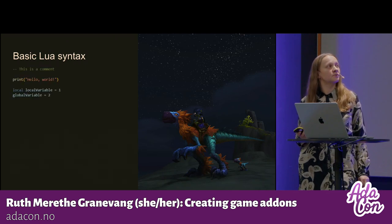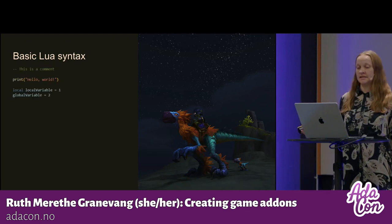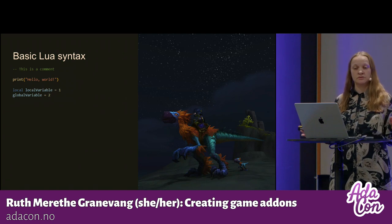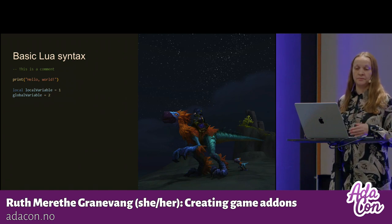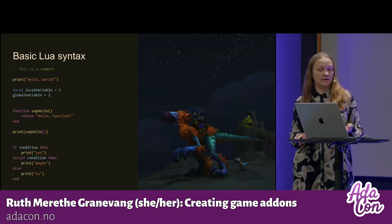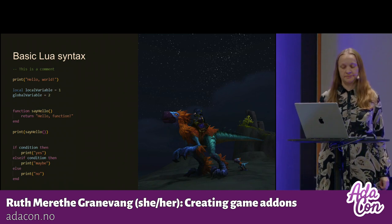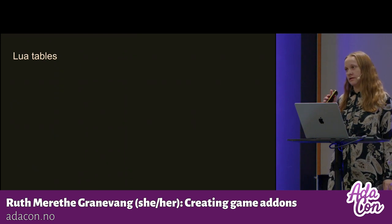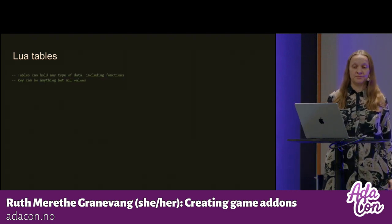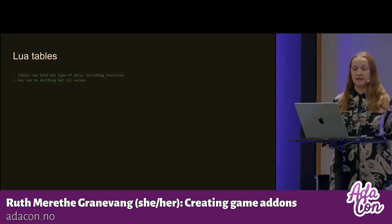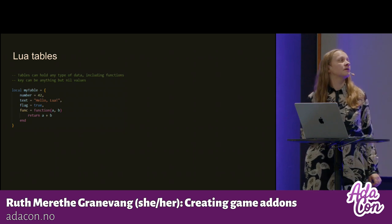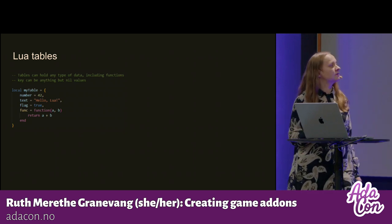Here is some basic Lua syntax. As you can see, it's pretty intuitive and straightforward. There is a comment, you can print out to the console, you can define local and global variables, and this is how a function is defined and how it's called. And this is a normal condition. There is one data structure in Lua that is used a lot, called Lua tables. It can hold any type of data, including functions. The key can be anything but nil. Here's an example with a number, string, boolean, and a function in a table.